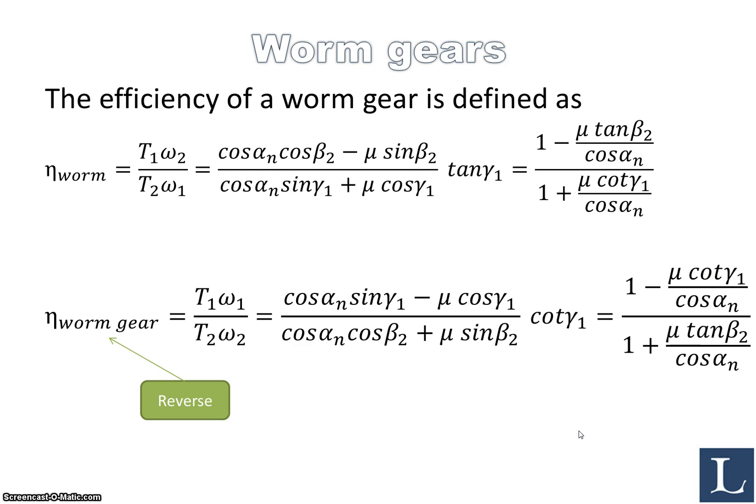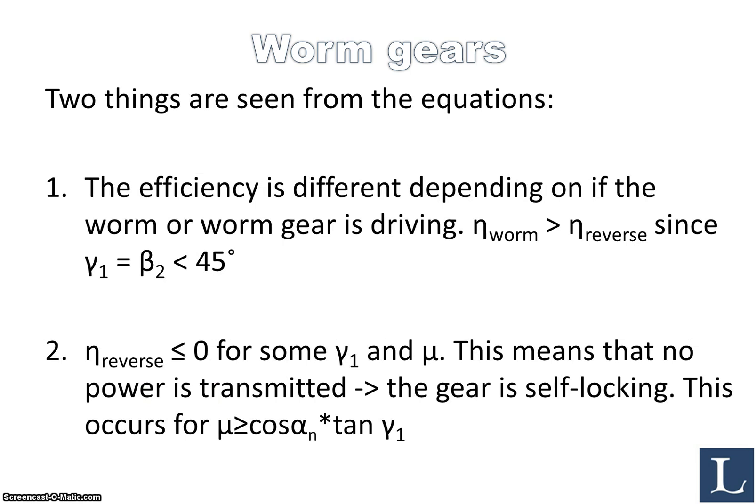Now if we would look at these equations a little bit in more detail and start putting numbers into these equations, two things will become evident. One, that the efficiency is different depending on whether the worm or the worm gear is driving the system. You saw that from the equations that they were not exactly the same, so then you will not have the same efficiency obviously. And the relation is that the efficiency when the worm is driving is greater than when the worm gear is driving, since we have gamma_1 equal to beta_2 and that is less than 45 degrees.